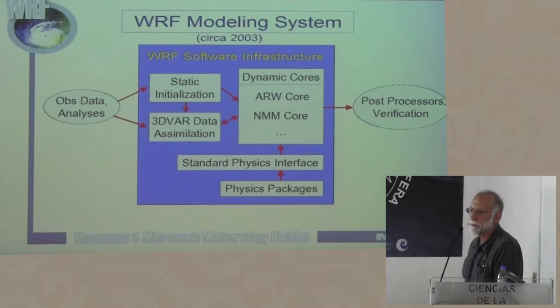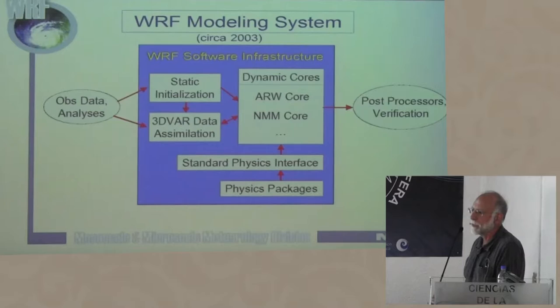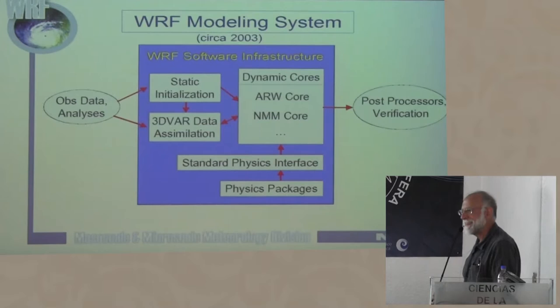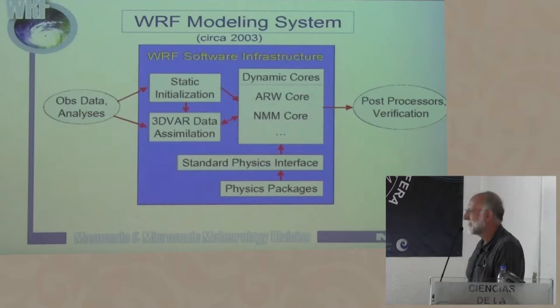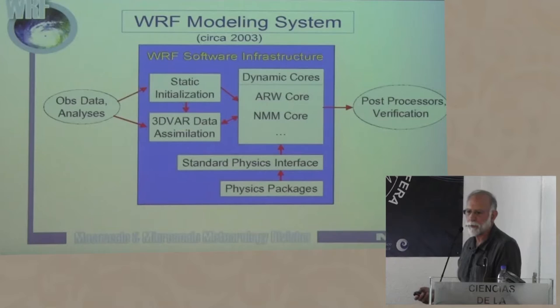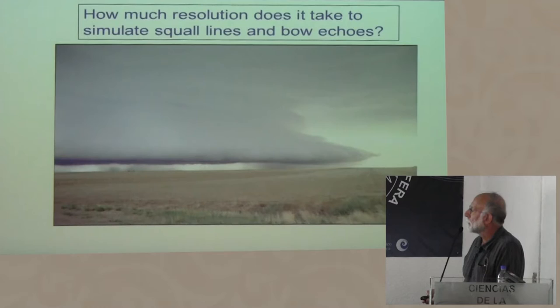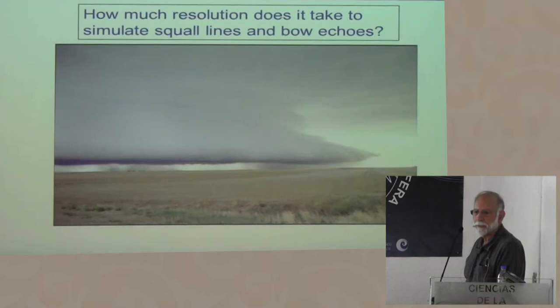Back in 2003, we were able to do real-time forecasts with this system — at four kilometer resolution. These are the questions we come up against: how much resolution does it take to simulate squall lines and bow echoes? There was a field experiment, BAMEX, specifically done to measure the internal structure of bow echoes and mesoscale systems. Here is a real-time forecast at four kilometers, and here's one at two kilometers. You could argue there was somewhat better depiction of the event at two kilometers. What about a supercell? We did the initial work at one kilometer. Here's a four-kilometer simulation and a two-kilometer simulation showing better definition of the supercells at higher resolution. Unfortunately in this case no supercells were observed, so it would have been a good structural forecast if they had developed.